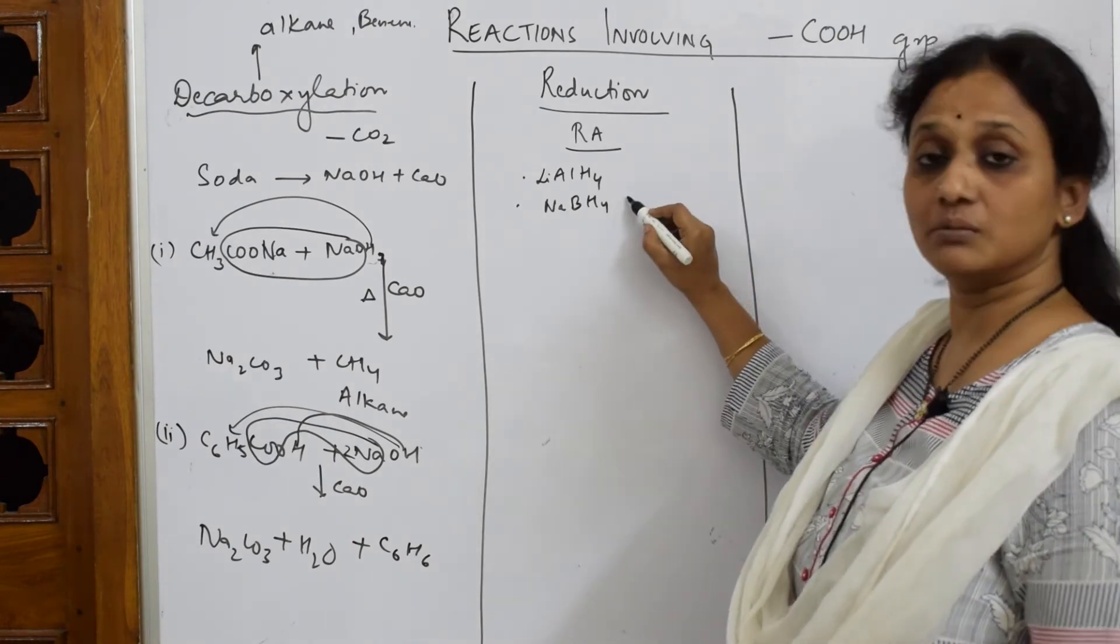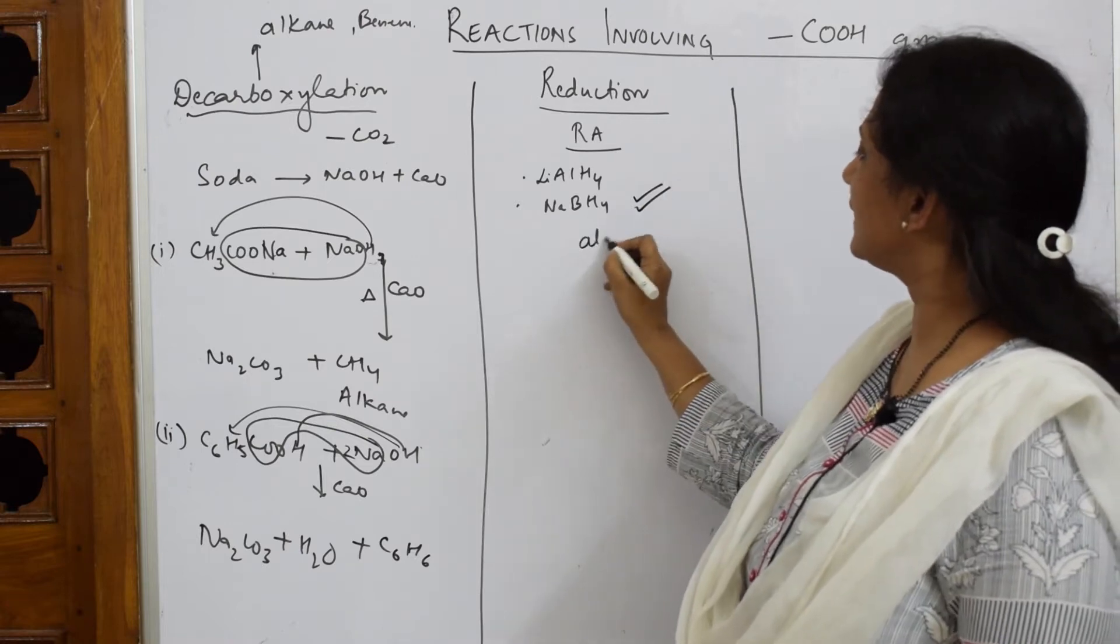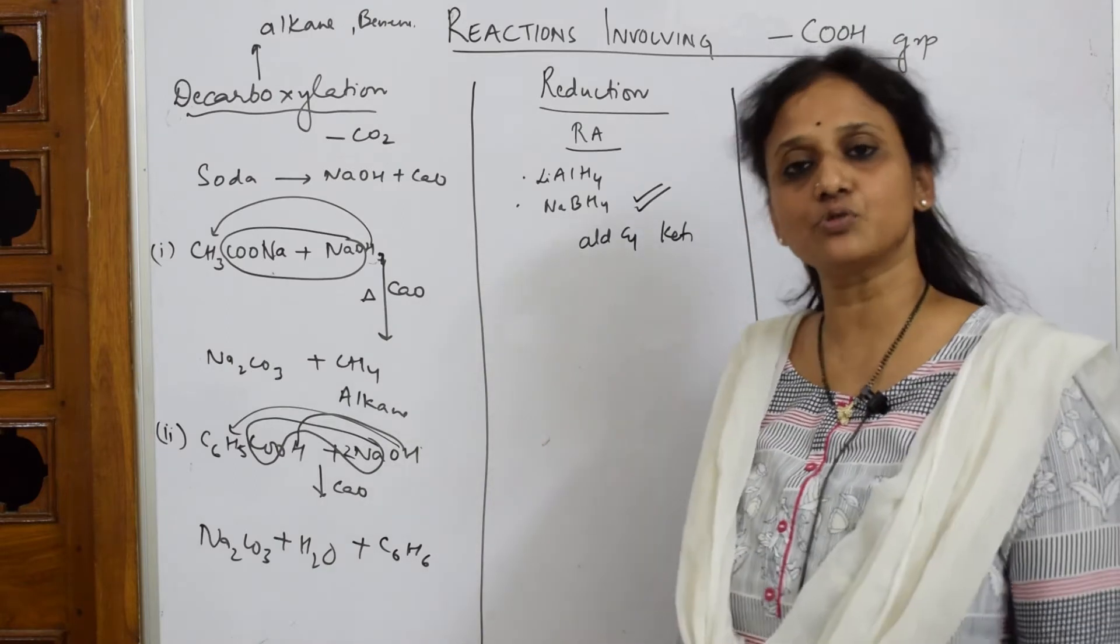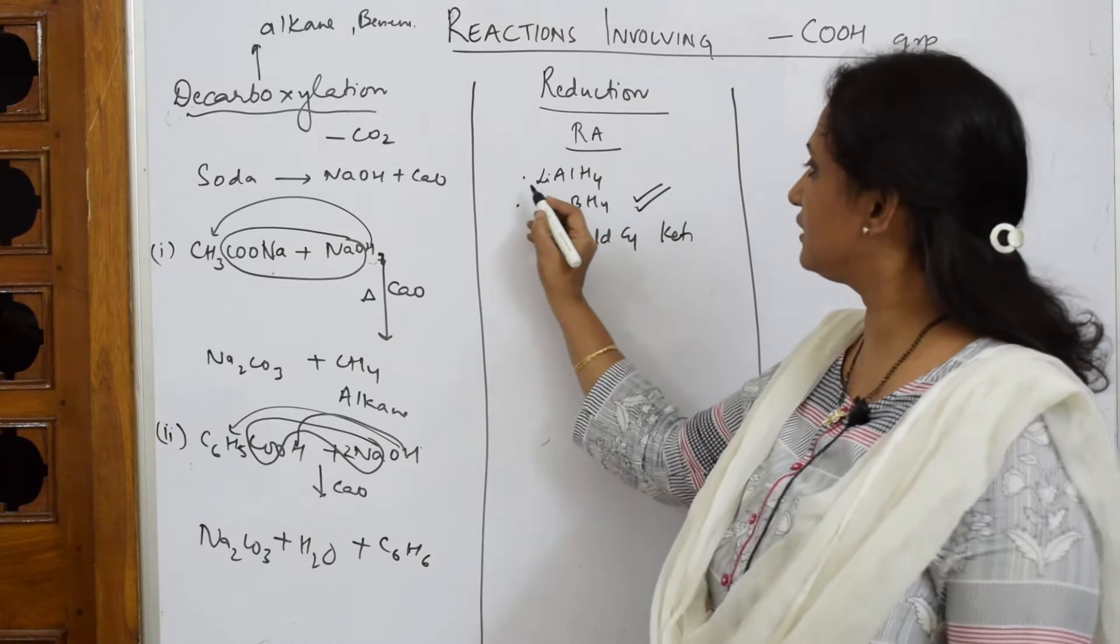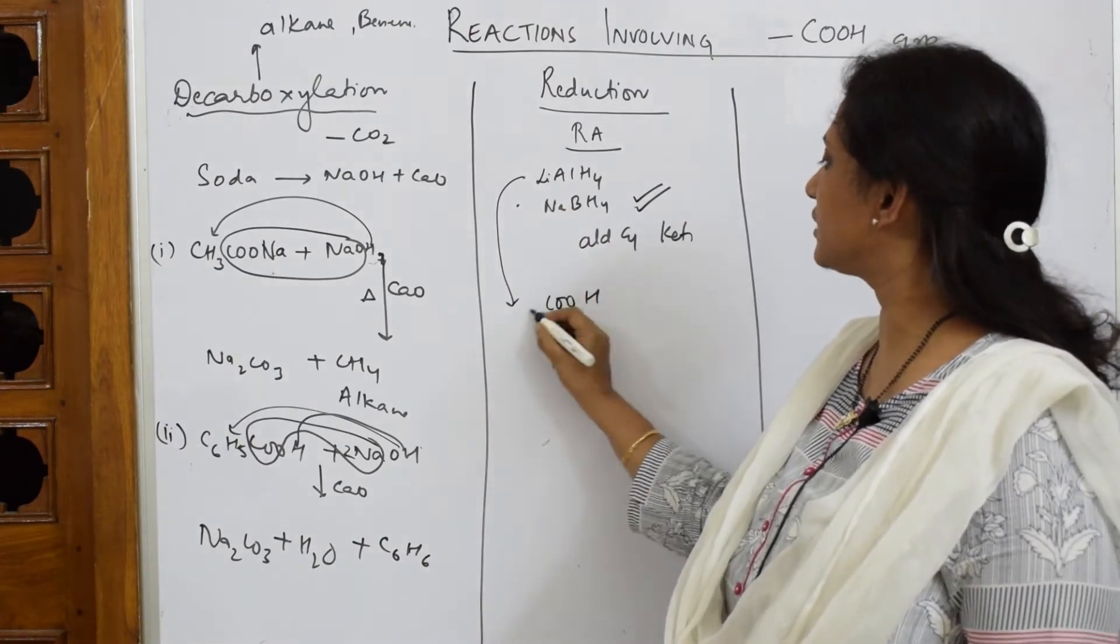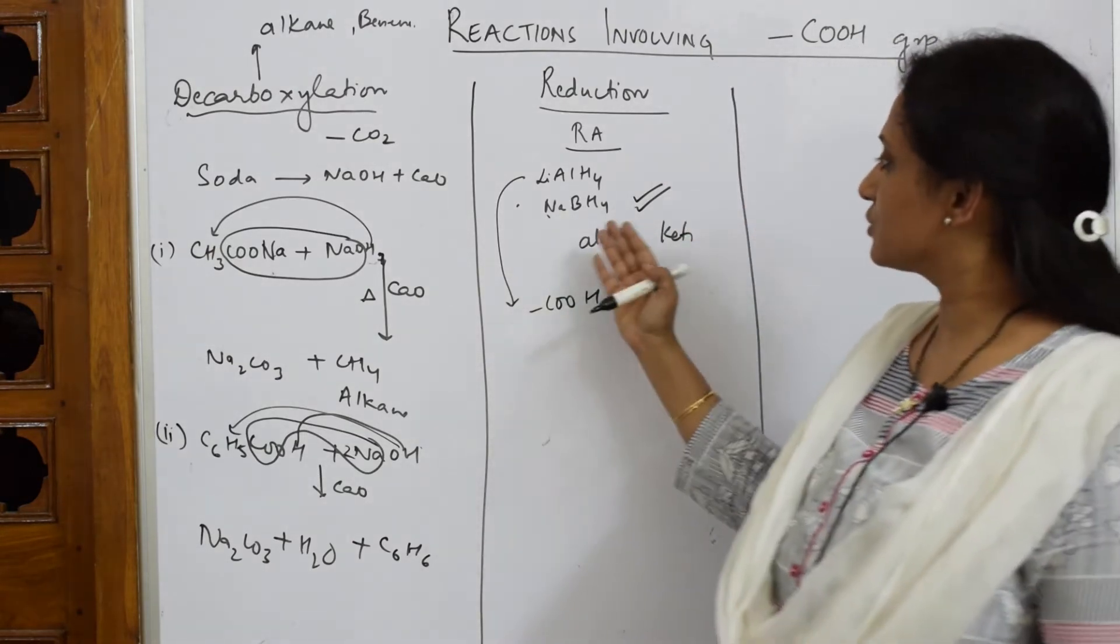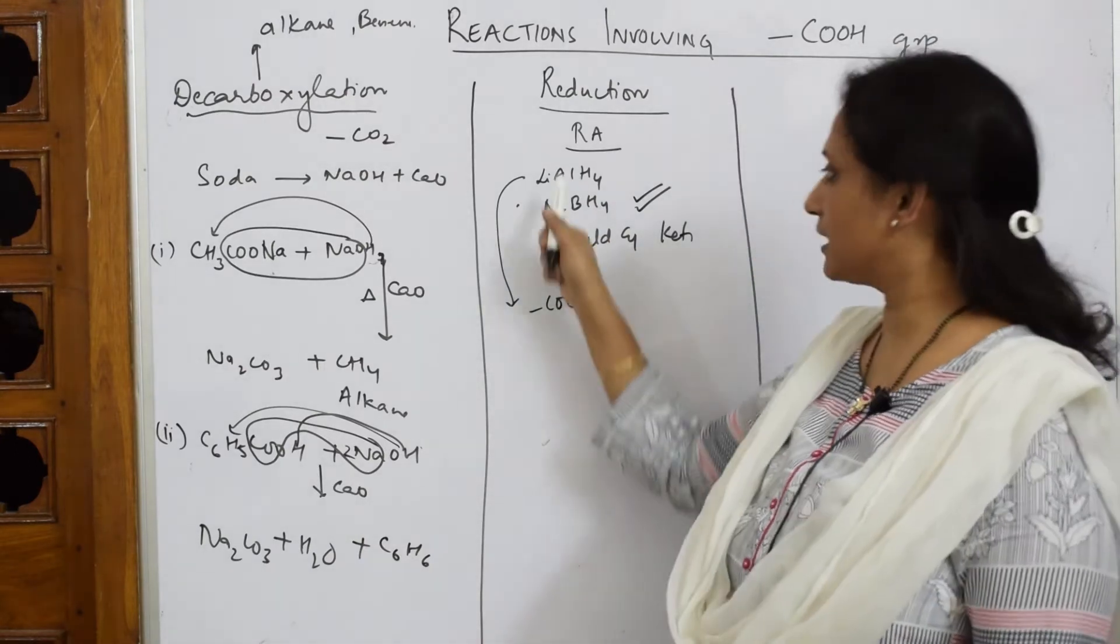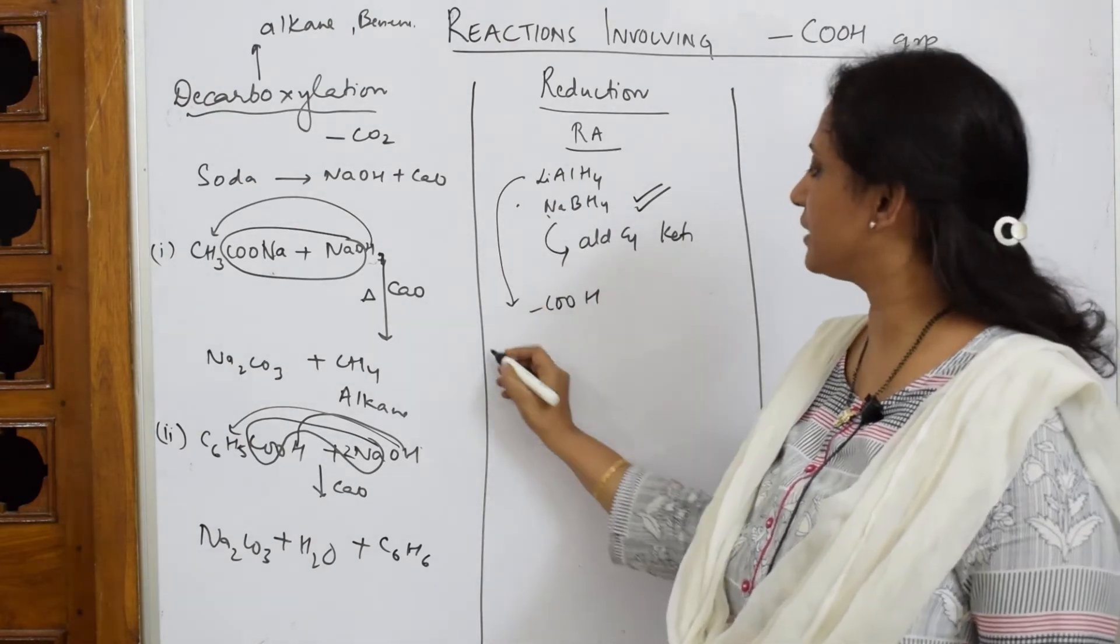Sodium borohydride is specific only for your aldehydes and ketones. Whenever you are using aldehydes and ketones, you have to use sodium borohydride only. But lithium aluminium hydride can be used for acids. Sodium borohydride does not work with acid. Lithium aluminium hydride can be used for this also but this can't be used for that.